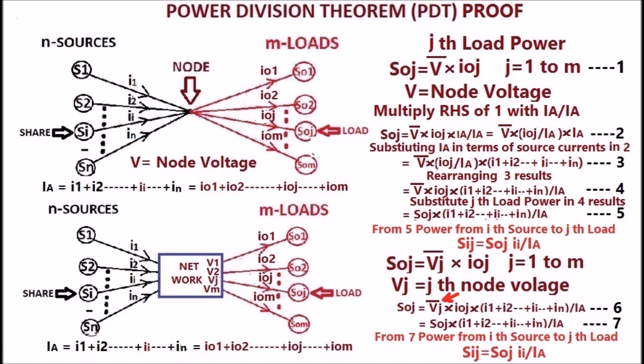In the case of a network, the j-th node voltage VJ is used for calculating the j-th load power as shown in equation 6. Substituting the j-th load power in equation 6 results in equation 7, which is the same as equation 5. From equation 7, power from the i-th source to the j-th load again gives the same expression: Sij is equal to SOJ multiplied with i-i by i-a, which is the expression for the Power Division Theorem. Download the paper published using the link given in the description of my videos.